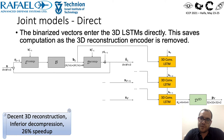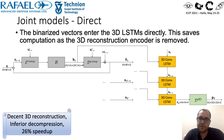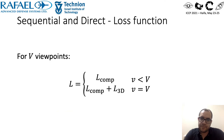A more efficient architecture is the direct one. Here the 3D reconstruction encoder is removed and the 3D LSTMs are fed directly by the binarized feature vectors. This is faster but results in inferior decompressed image quality. The loss for the sequential and direct models is simply the compression loss for all viewpoint images until the last, and for the last one we add the 3D loss as well.